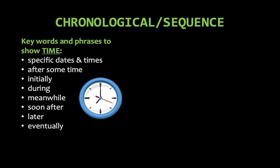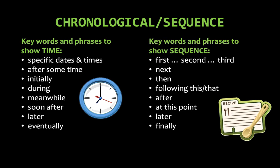When writing or reading a chronological article or sequential article, some keywords that might pop out would be specific times and dates, initially, during, soon after, after, and eventually. Here are some keywords and phrases that you might see when reading about a sequential topic: first, second, third, next, then, following this, after, later, and finally.